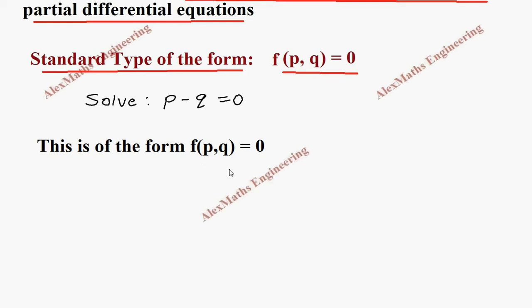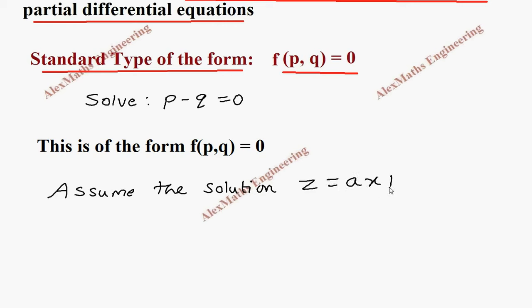Since this is of the form f(p, q) = 0, we assume the solution. Let's assume the solution as z equal to ax plus by plus c.